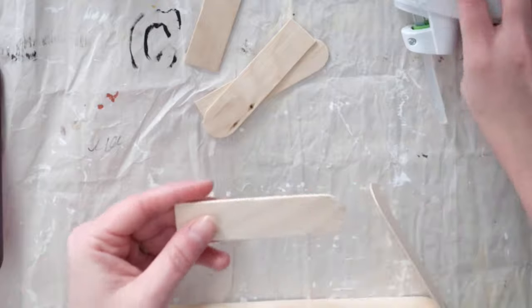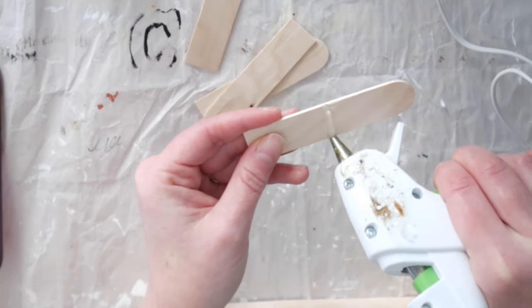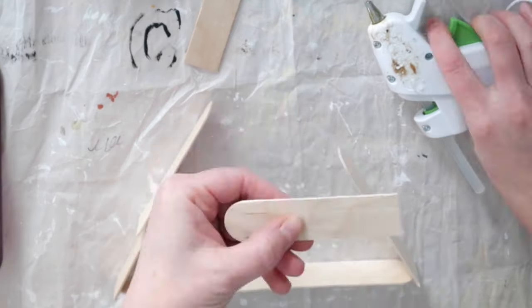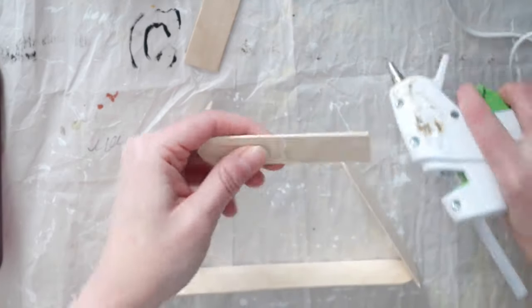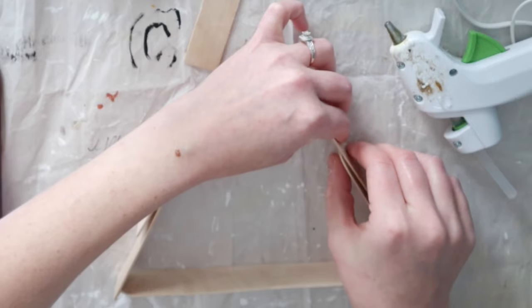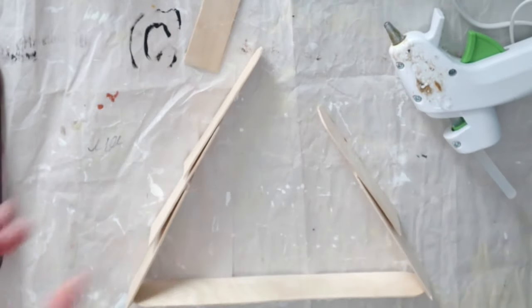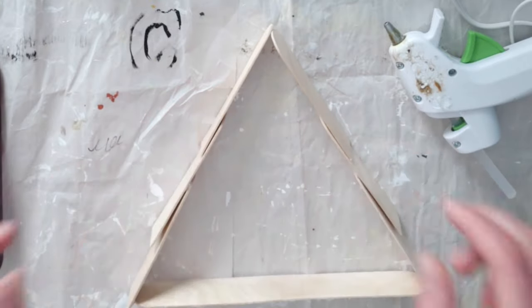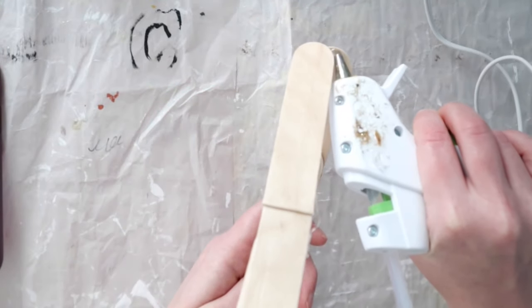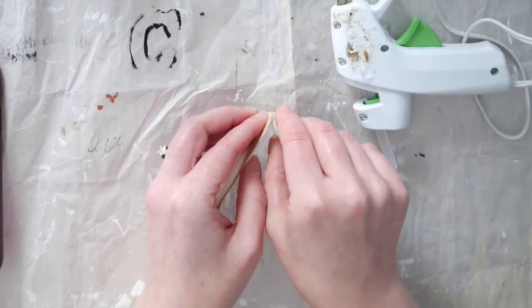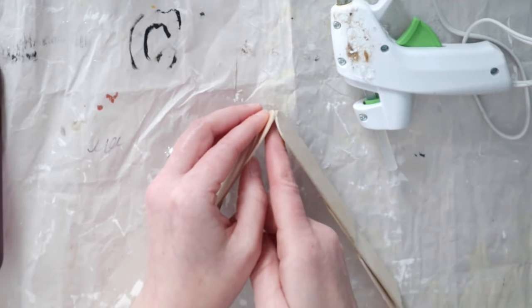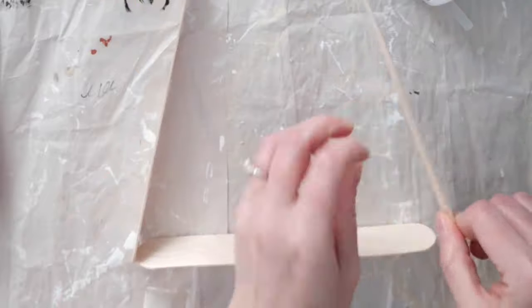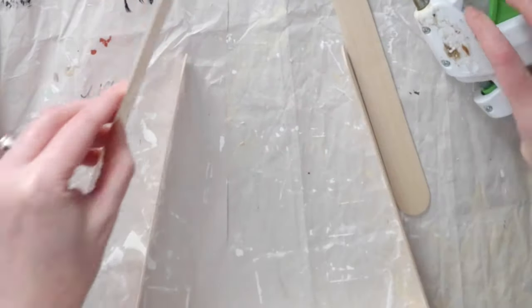Then you're going to take two more and glue them about halfway up to the previous ones. I continued this for the next two as well, and then glued the top together. For the larger tree, I repeated this process except I didn't cut the craft sticks down.